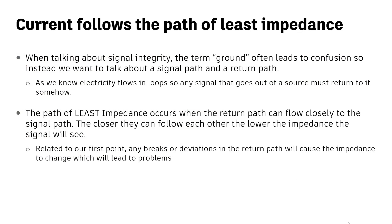Current follows a path of least impedance, and this is related to our first point. When we're talking about signal integrity, even though we're very accustomed to talking about ground, this term is going to create problems when we're talking about signal integrity. So what we want to do is really think about a signal path and a return path. As we know, electricity flows in loops, so any signal that leaves a source must return to it somehow. We want to make sure to think about both the signal path and the return path — they both need to be taken care of. The path of least impedance occurs when the return path can flow closely to the signal path. The closer they can follow each other, the lower the impedance the signal will see. So if there's any break, any change in that geometry or that path, then we're going to see an impedance change.